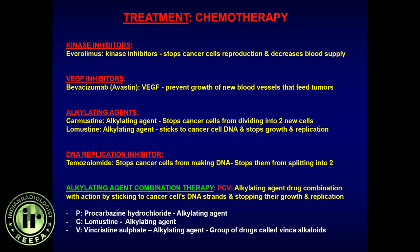Chemotherapy agents include kinase inhibitors, which stop cancer cells from reproducing and decrease blood supply; VEGF (vascular endothelial growth factor) inhibitors such as Avastin, which suppress tumor blood vessels and their permeability; alkylating agents, which add methyl groups to stop DNA replication; and temozolomide, a DNA replication inhibitor. Combinations such as PCV (procarbazine, lomustine) are also used.